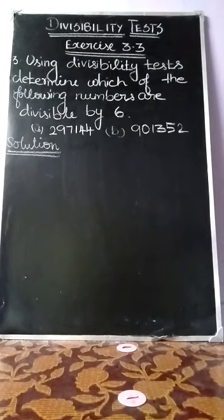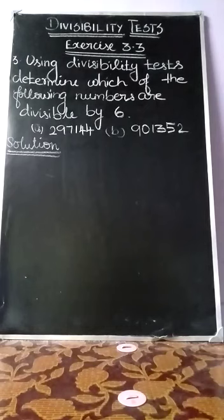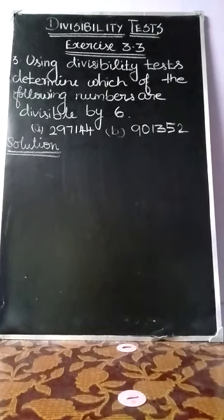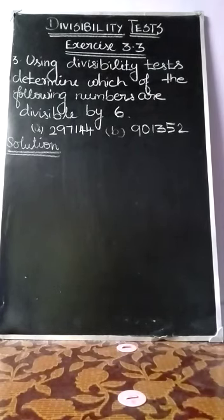I think you are well aware of the divisibility rule. What is the rule for 6? The divisibility rule for 6 requires that both the condition of divisibility by 2 and divisibility by 3 are satisfied. Only then is the divisibility by 6 rule satisfied. So we have to check the given value is first divisible by 2, then divisible by 3. Only then can we say the given value is divisible by 6 or not.